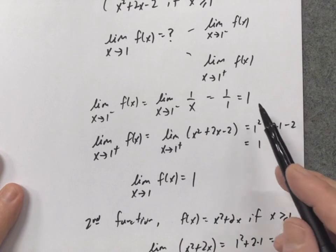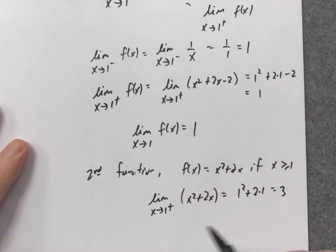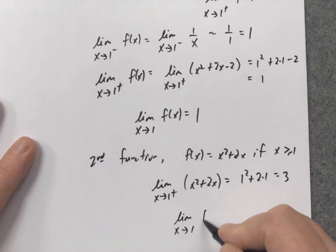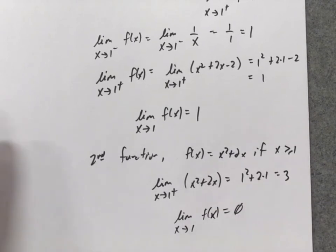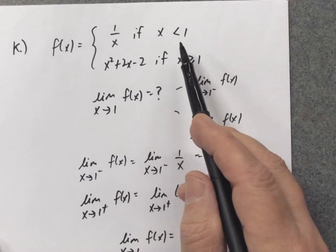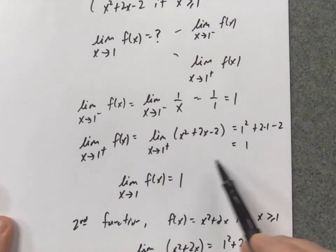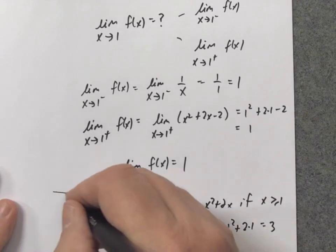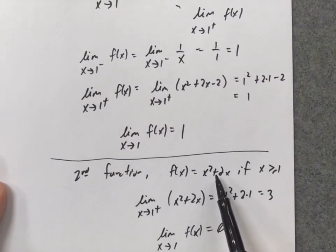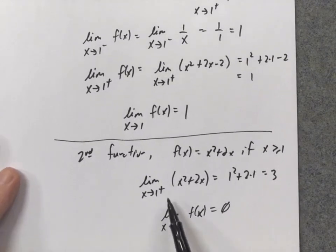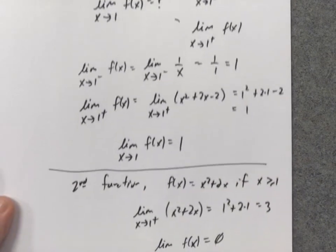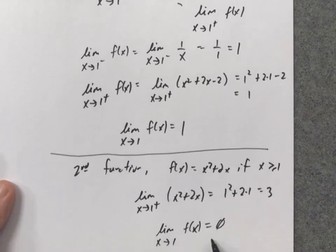Now I compare: from the low side it's 1, and from the high side it's 3. So for this new problem, you would have to say the limit doesn't exist because the low and the high side approach different numbers. In the original problem, the low and high side both approach 1, so the overall limit is 1. But with the modified second function, the high side equals 3, and since 3 is different than 1, there would not have been a limit. That's the key idea when working with piecewise functions.